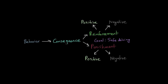We have these two types of consequences: reinforcement and punishment. What reinforcement means is it's going to increase the tendency that the goal behavior will occur again. And you can do that through positive reinforcement and negative reinforcement.